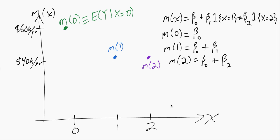We can see here how we can write the CMF values M of 0, M of 1, M of 2 in terms of the three parameters beta 0, beta 1, and beta 2.